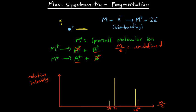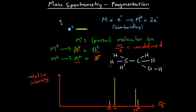Down here we have an example of a mass spectrometry graph — a graph of different mass-to-charge ratios and their relative intensities for ethanol. Ethanol looks like this. The molecular formula for ethanol is C₂H₆O. The carbons each have a mass of 12, the hydrogens each have a mass of 1, and the oxygen has a mass of 16. So we're starting with 12 plus 12 plus 16 plus 6, giving us a total mass of 46.